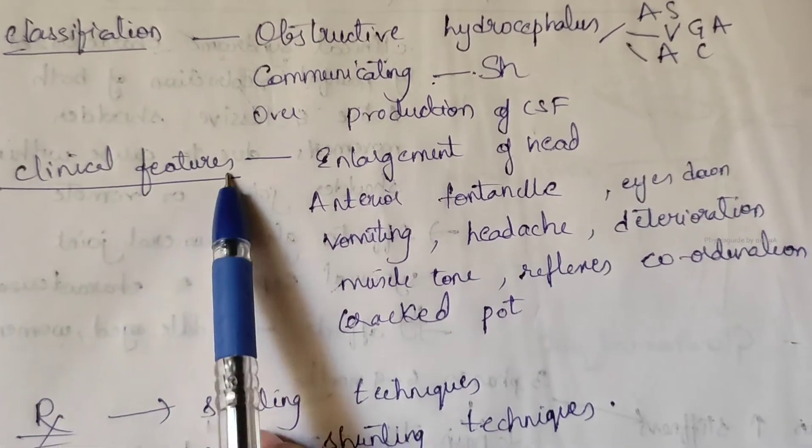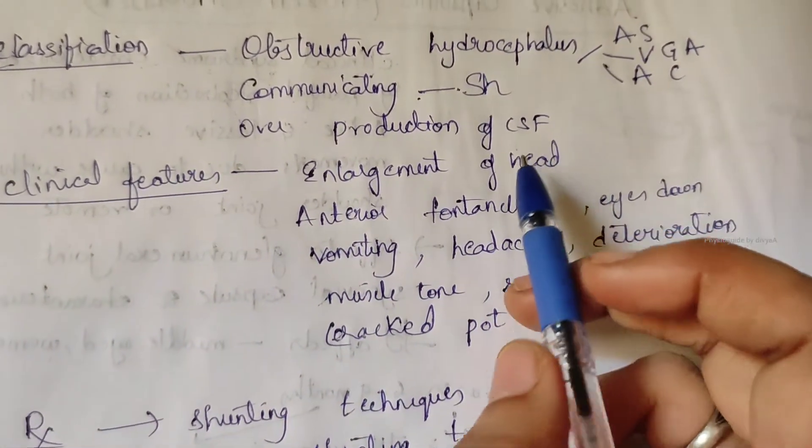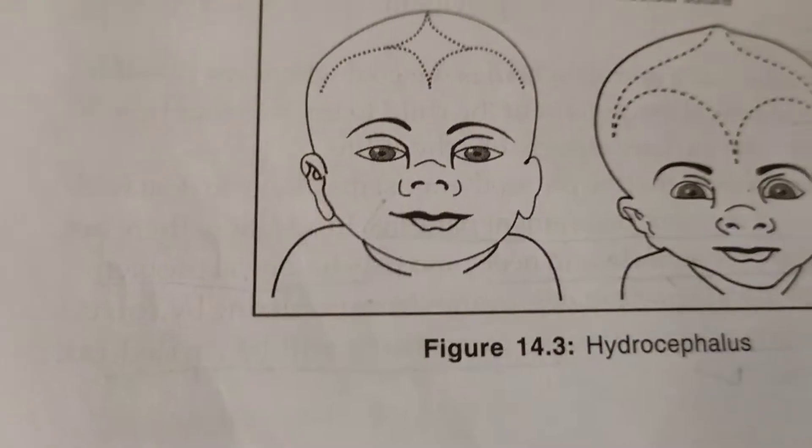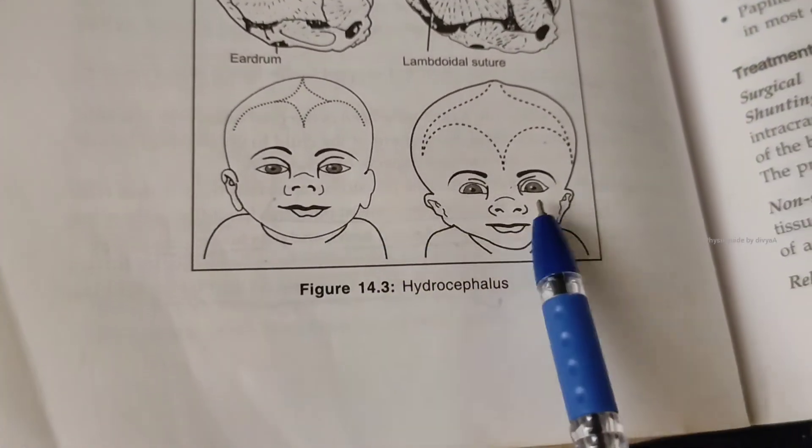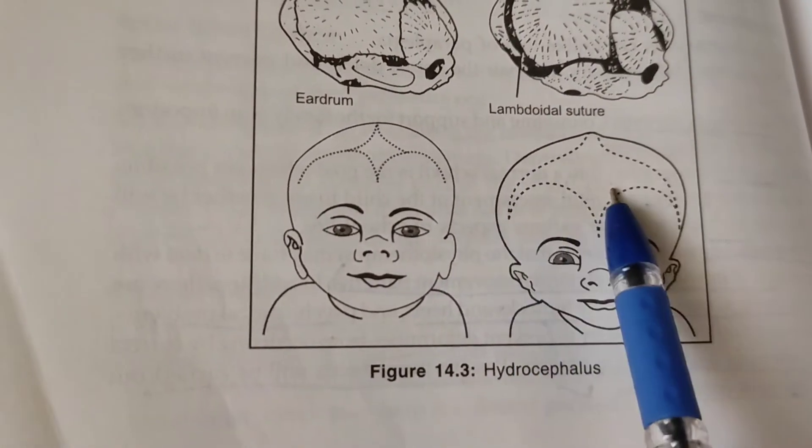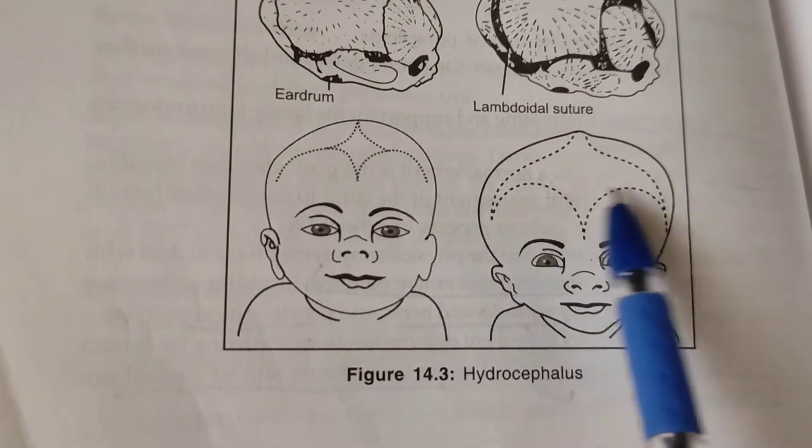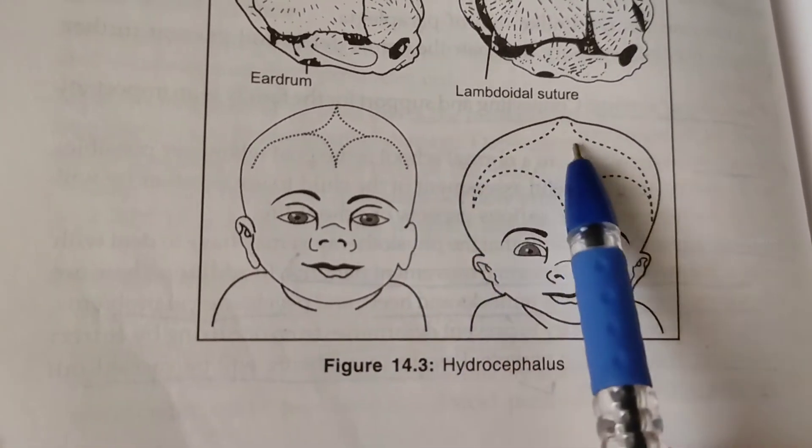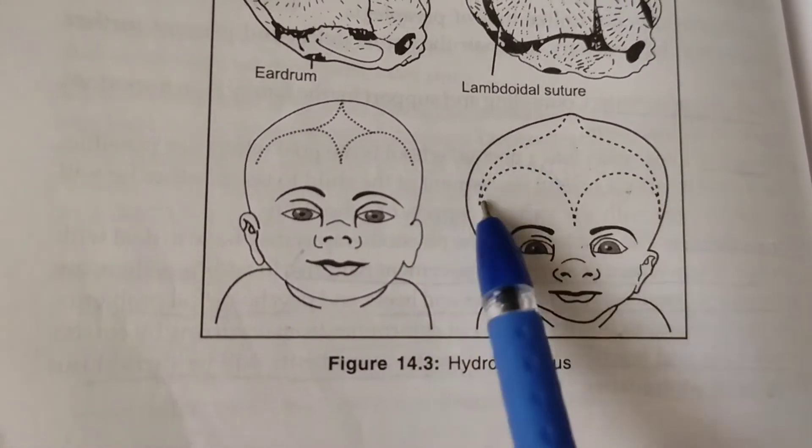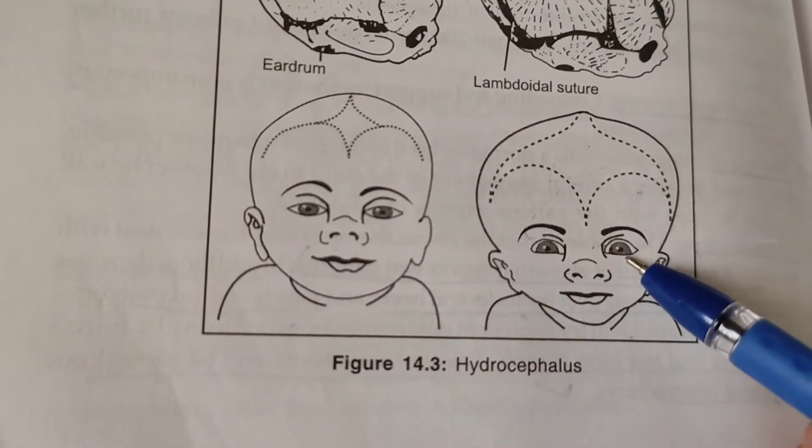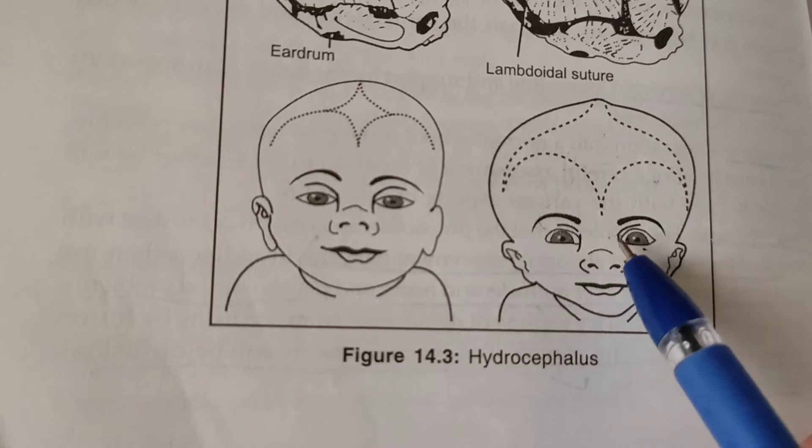Now, what are the signs and symptoms? Clinical features: as a result, there will be enlargement of the head, seen more prominently. See, this is normal, this is enlargement of head. Anterior fontanella is wide open and bulging. The scalp veins are dilated, the forehead is broad, and the eyes may be deviated downwards, producing the setting sun sign.